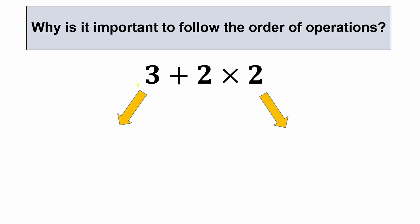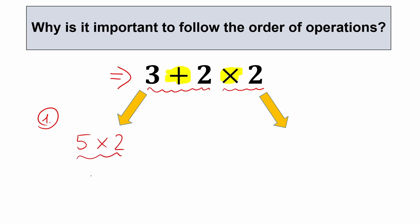Let me show you a really quick example — the easiest one: 3 plus 3 times 2. A lot of students might start with the addition: 3 plus 3 equals 5, and then 5 times 2 equals 10. So the first group of people might think 10 is the correct answer.